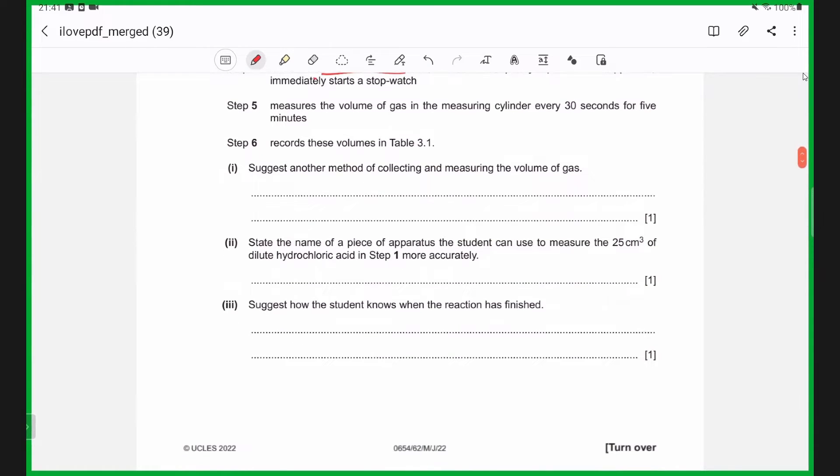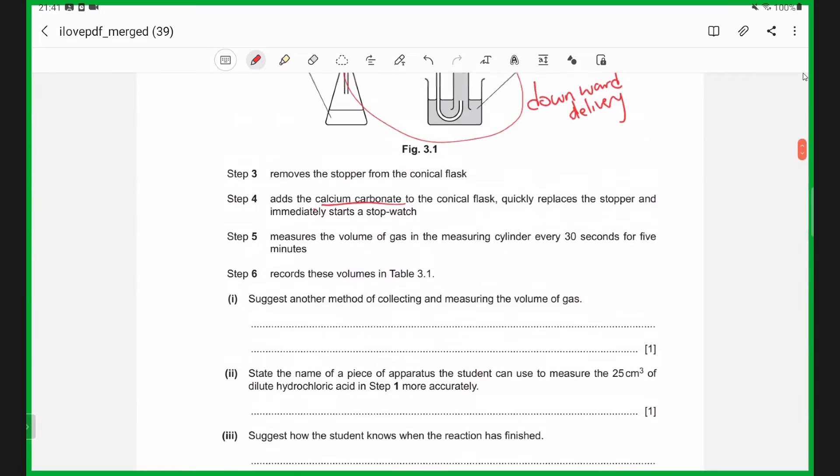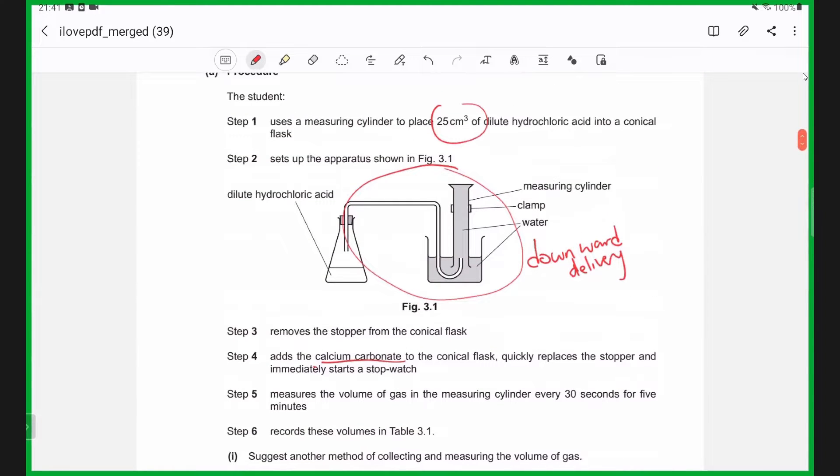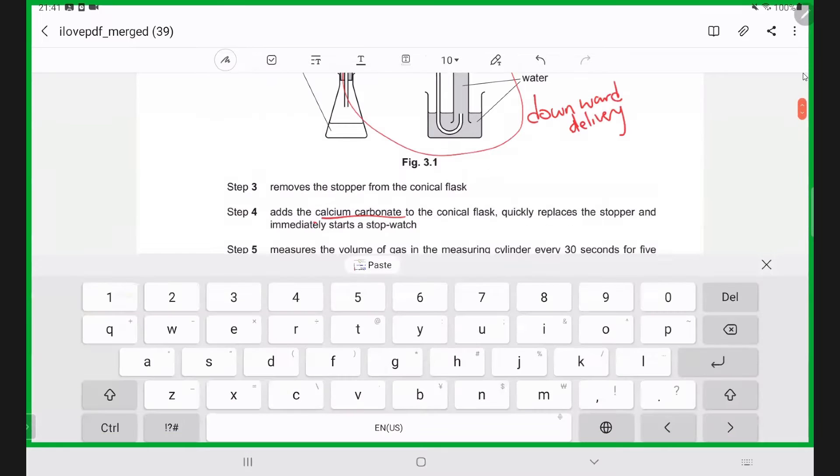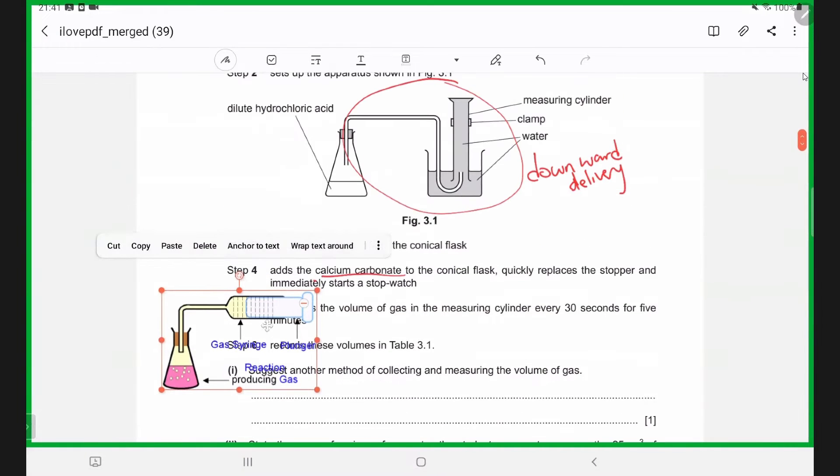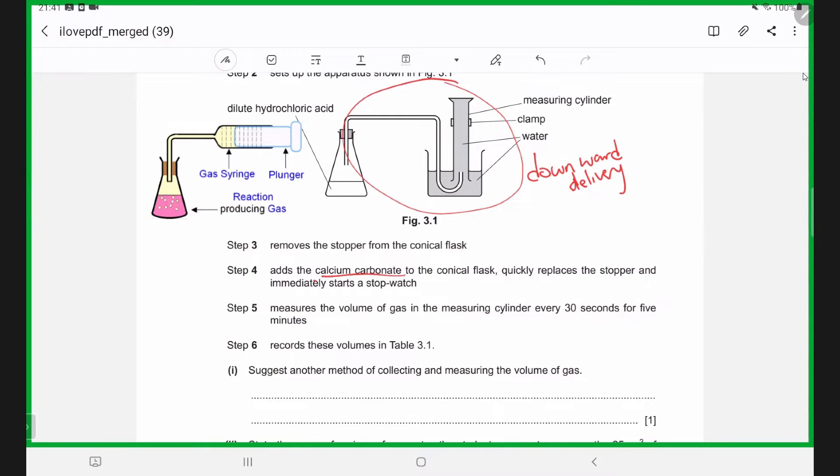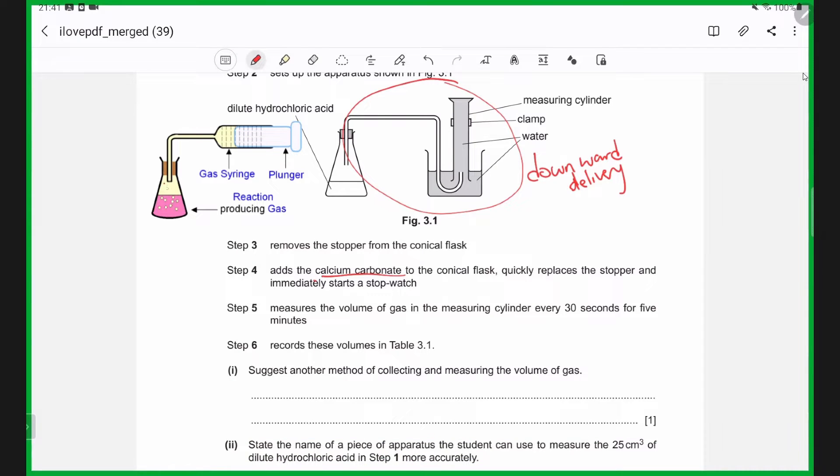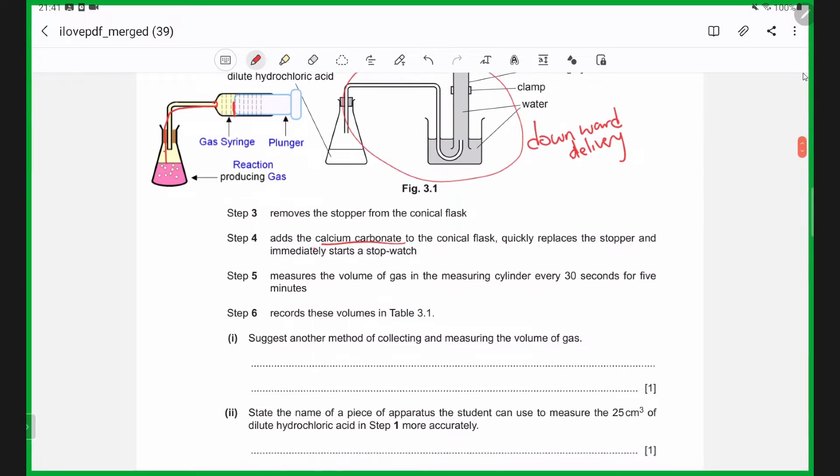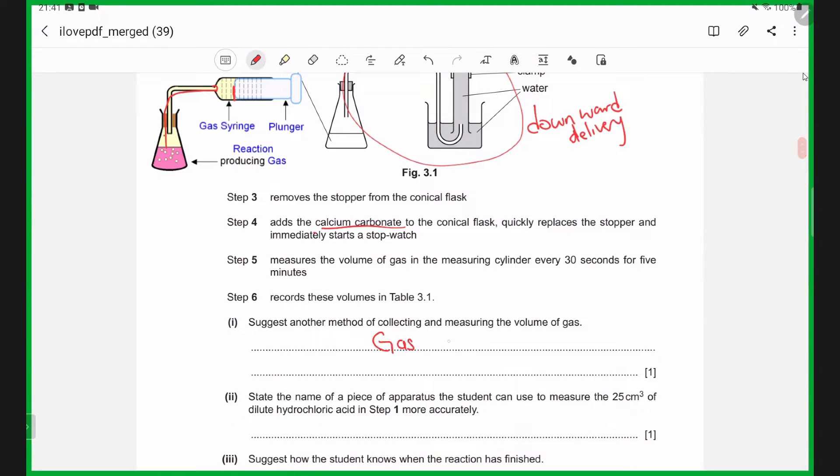Suggest another method of collecting gas. Remember that aside from downward delivery, we also have something called a gas syringe, which is shown in this diagram here. We can use it to measure the volume of gas produced in a reaction. The gas will push the plunger to a certain extent, and we can take the reading here to know how much gas is being produced. So I'm going to write gas syringe for my other method.